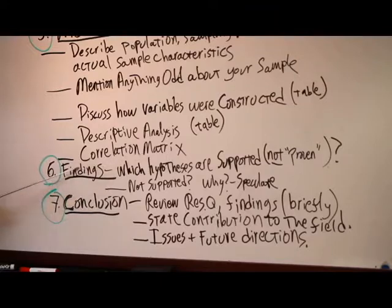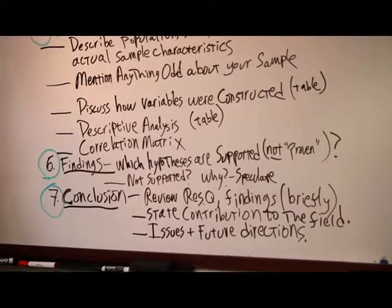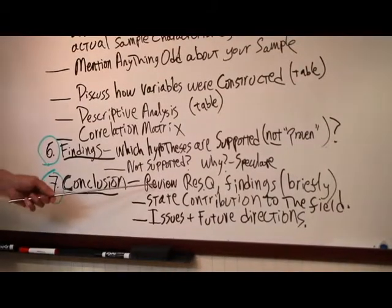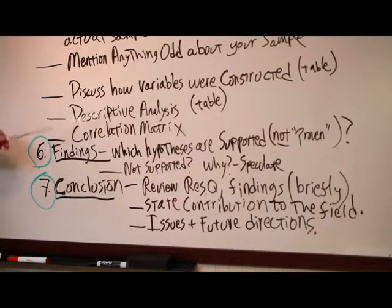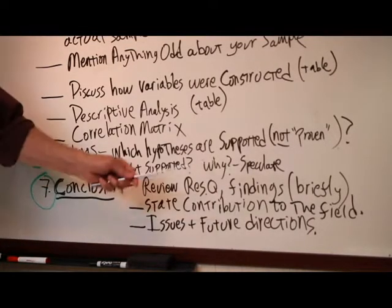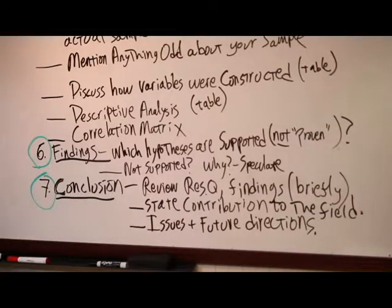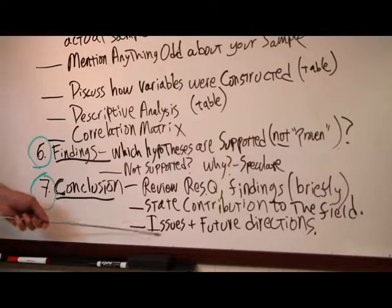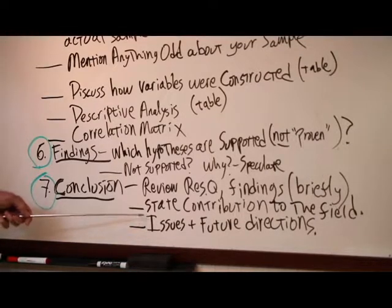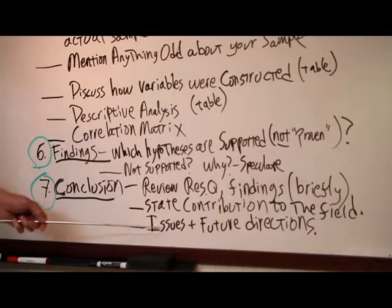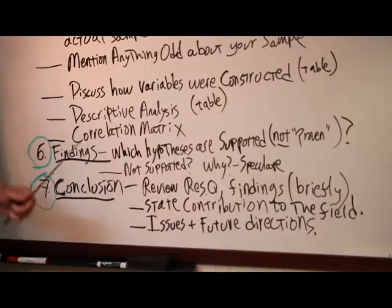The findings section is very short, and then the conclusion, which is also somewhat short, a page or two at the most, would be for you to review the research question and your findings very briefly because you just discussed the findings in the previous section. Then state your contribution to the field here. Be concrete about this. Finally, this is something that a lot of people skip, which is a bad idea. You want to discuss at the end, the very end of your paper, issues and future research directions.